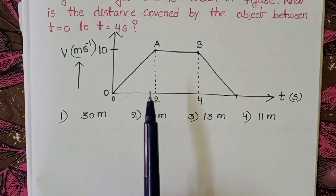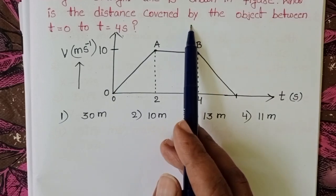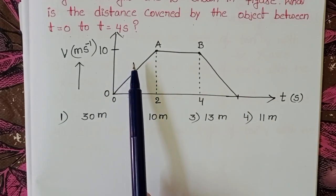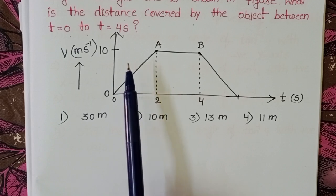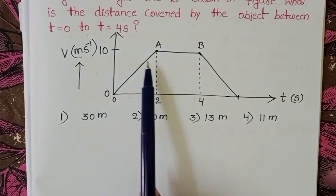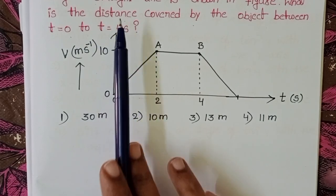This is a velocity-time graph. By using this graph, we have to find out the distance covered by the object. When a body is moving along a straight line path, the magnitude of the displacement equals the distance. So don't confuse - here, magnitude of displacement is nothing but the distance.